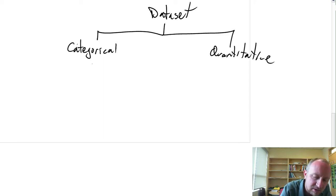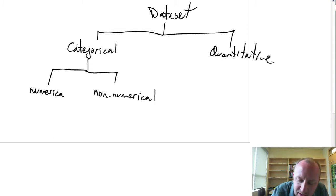A categorical variable, it can be either numerical or it can be non-numerical. A quantitative variable, on the other hand, can only be numerical.